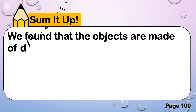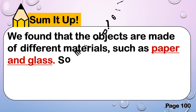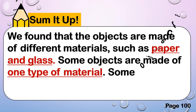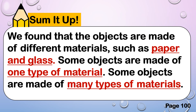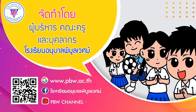Let's sum it up. We found that objects are made up of different materials such as paper, glass, fabric, plastic, and many more. Some objects are made up of one type of material, and some objects are made up of many types of materials. For today, thank you for listening. Thanks.